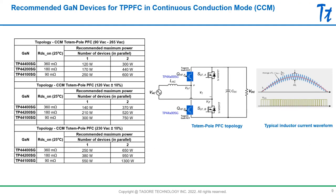Finally, when you go to the CCM version of the totem pole PFC — with similar current waveforms as in the CCM boost — you notice a similar pattern where at low powers the power capability does reduce, but as you go to higher power levels, the power capability of CCM totem pole is higher than the CRM totem pole PFC.